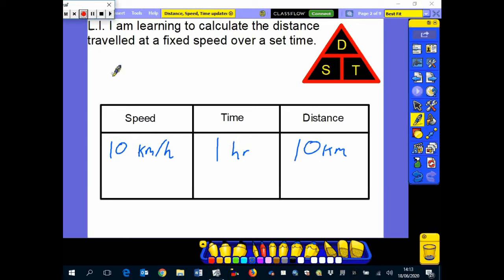So this means that if we did the same speed but for let's say 3 hours, 10 kilometres an hour times 3 hours well that's going to be 10 times 3 and it's going to be 30 kilometres.